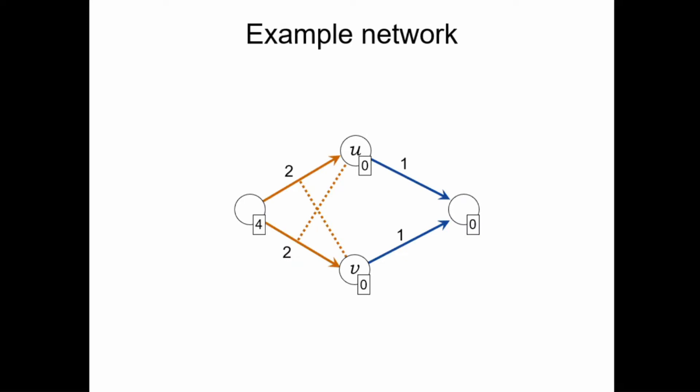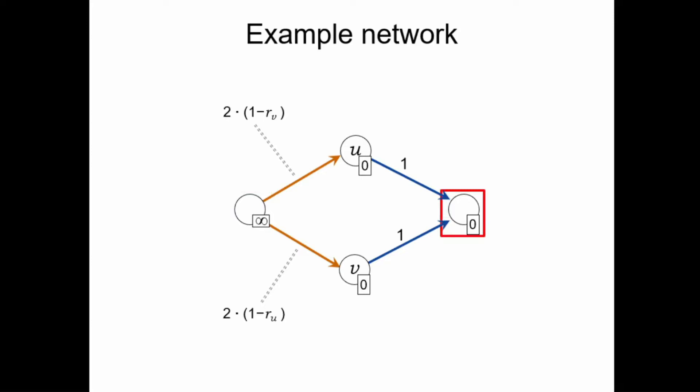Let us see a simple example for a financial system with both debts and CDSs. In this system, we have bank U and bank V that both have an outgoing debt of one and an incoming CDS in reference to each other, where these CDSs imply a payment obligation of this amount. The source node has enough funds to pay its liabilities in any case, so we can assume it has infinitely many funds. The sink node does not have any liabilities, so it cannot go into default. The interesting part of this system is the recovery rates of U and V.